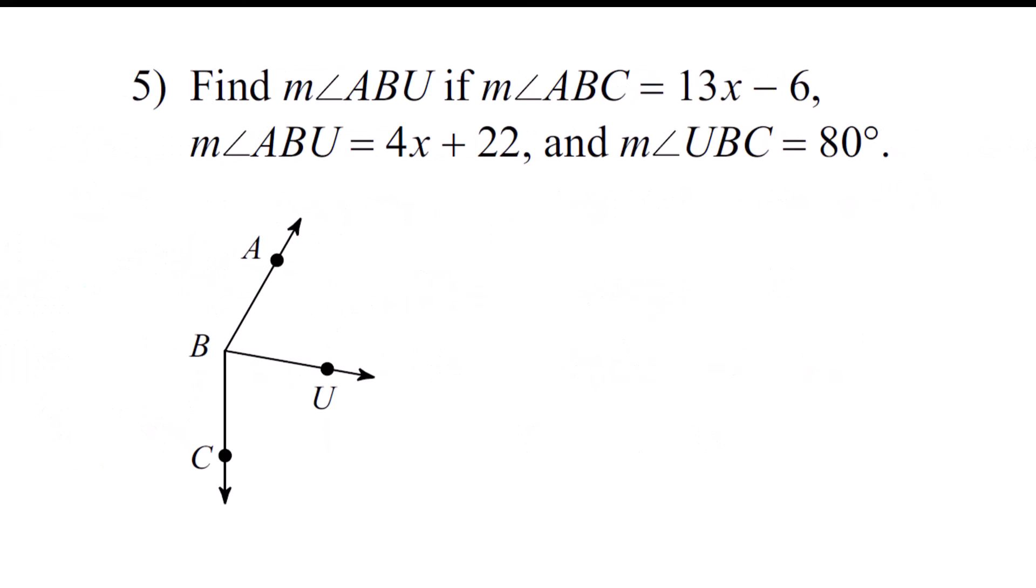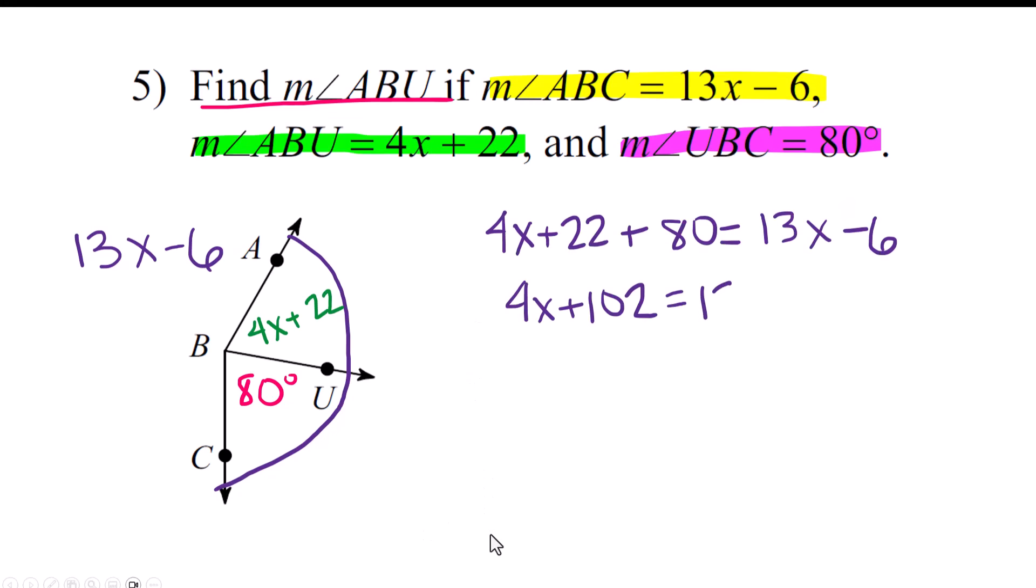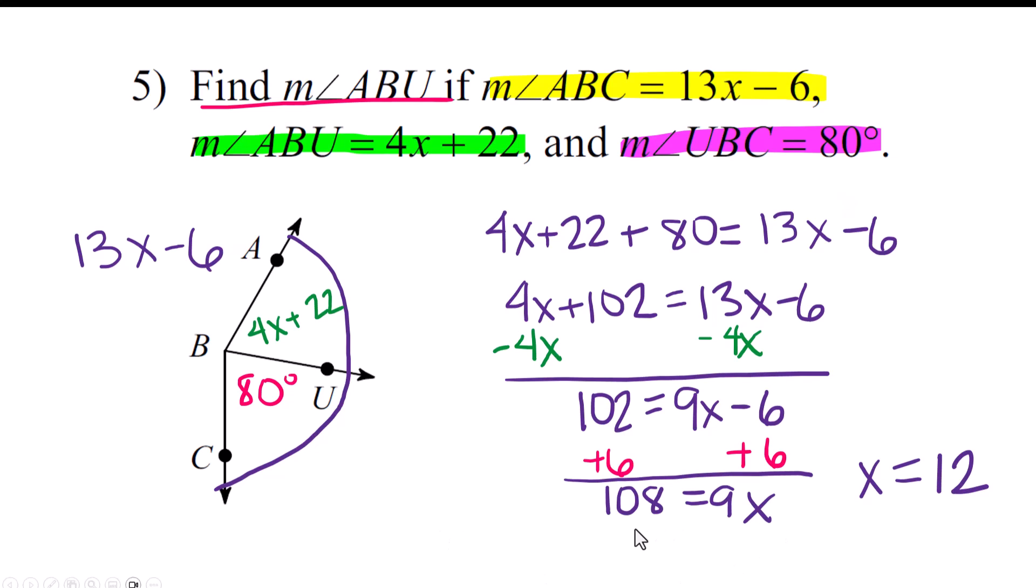All right, I'm going to do this one. It's very similar to what we did before, except after we find the x, we're going to have to plug it in to find the actual angle. In this case, we're looking for the size of angle ABU. All right, ABC, which is the whole thing, is 13x minus 6. ABU as an algebra expression is 4x plus 22 - that's where we're going to plug the x in when we're done. And UBC is 80. Again, the setup is the same: add the two little pieces together and set it equal to the whole thing. I did that here. I'm going to combine the 22 and the 80 and get 102, so now I have an equation with variables on both sides. The way I like to do this is to subtract the smaller variable, and so then I'm going to add 6 to both sides. We end up with 9x equals 108. Divide 108 by 9, you get x equals 12.